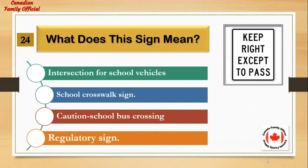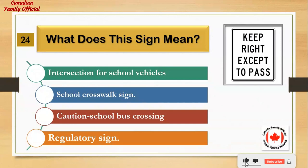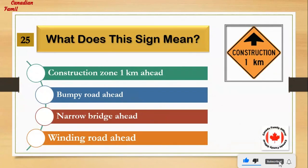What does this sign mean? Number 1: intersection for school vehicles. Number 2: school crosswalk sign. Number 3: caution school bus crossing. Number 4: regulatory sign. And the answer is: regulatory sign.